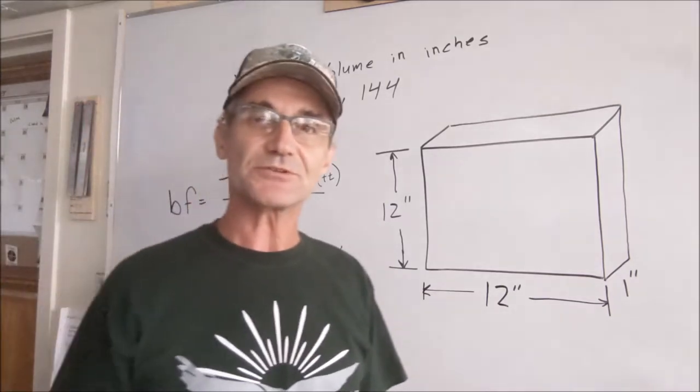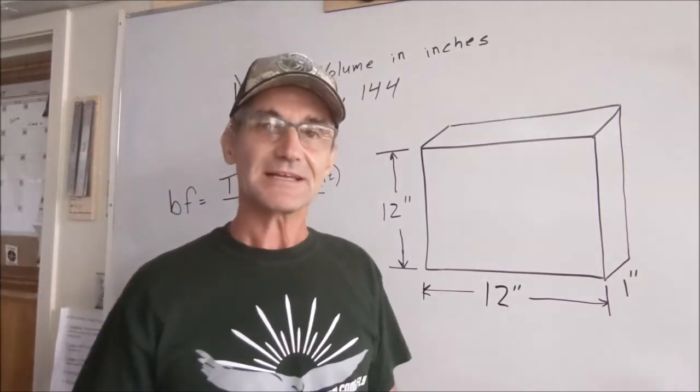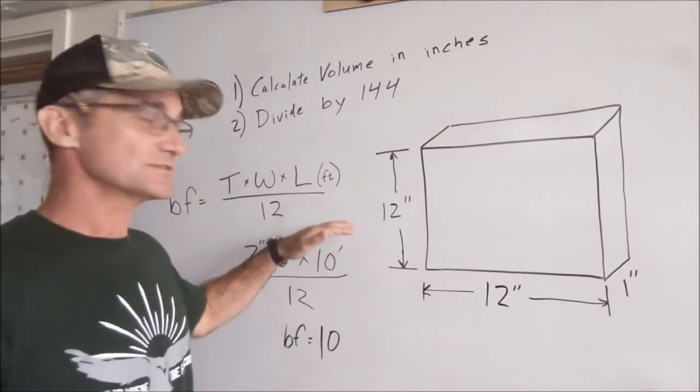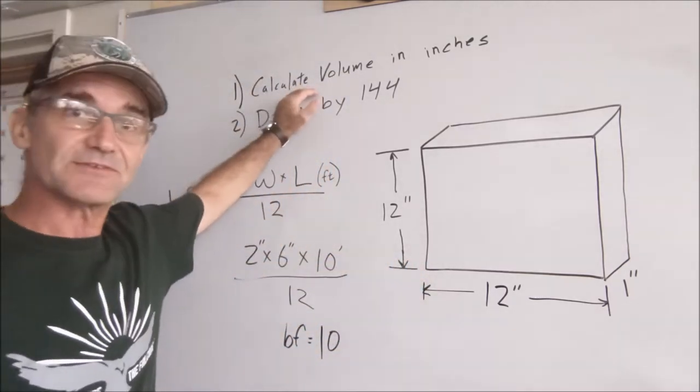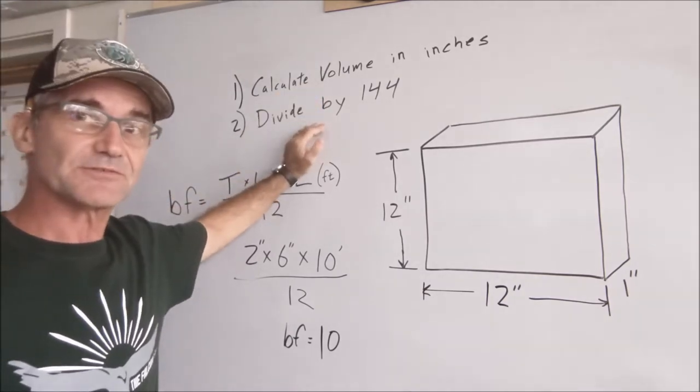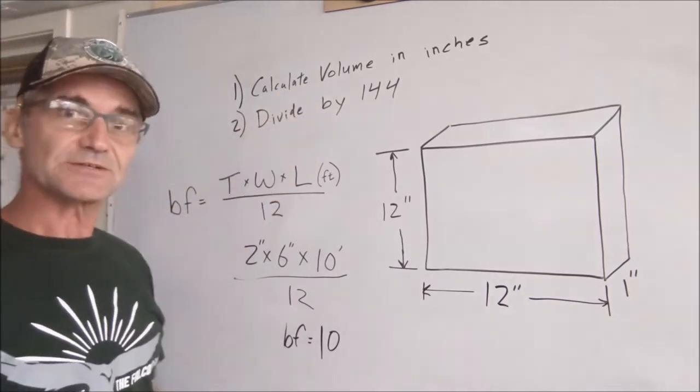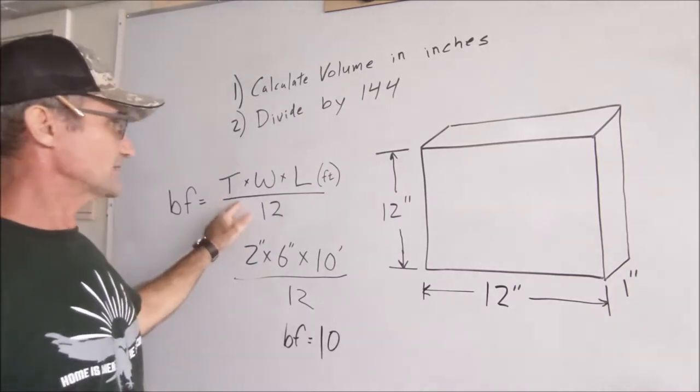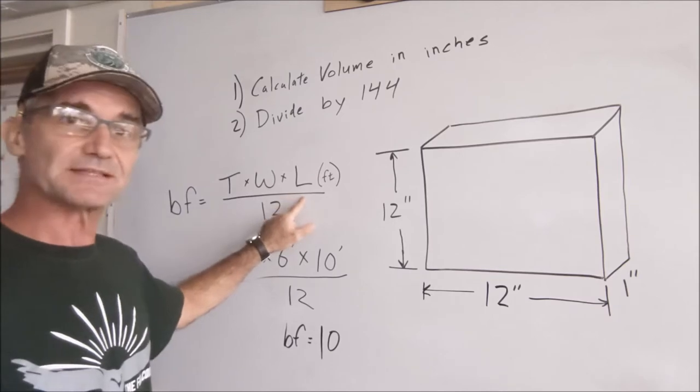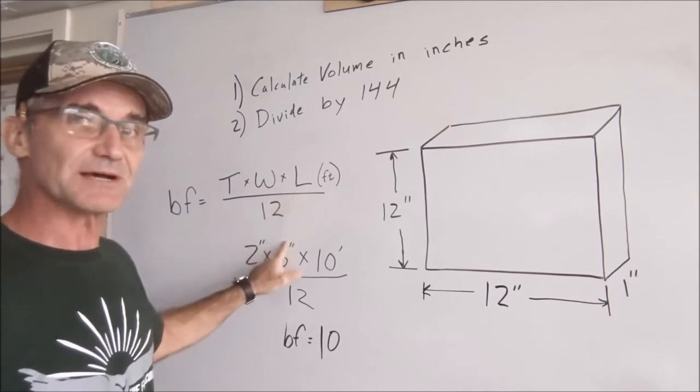I'm going to put the camera over my shoulder and do a few problems. Again, let me just reiterate how you find board feet. It's a volume measurement. First thing you want to do is calculate the volume of your board in inches and then divide that by 144. Another way to do it, maybe a little easier, is take the thickness and the width in inches, multiply it by the length in feet and divide by twelve.